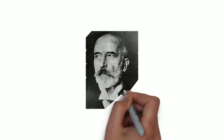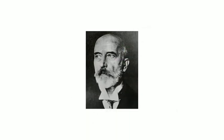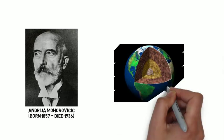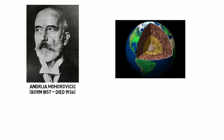In 1909, a Croatian meteorologist and seismologist Andrija Mohorovic, born 1857, died 1936, discovered the Earth's crust by observing a sudden change in seismic velocity at about 31 miles below the Earth's surface.